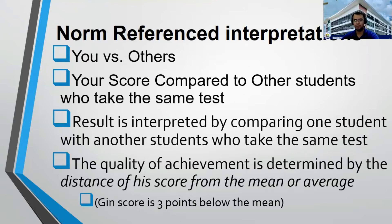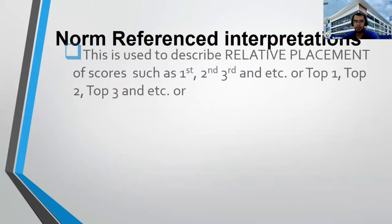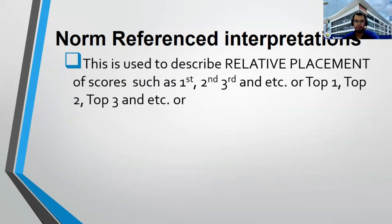So your score will be compared to others — the score of others is the mean or the average. This is used to describe relative placement of scores, such as 1st, 2nd, 3rd, and so on, or top 1, top 2, top 3, and so on.